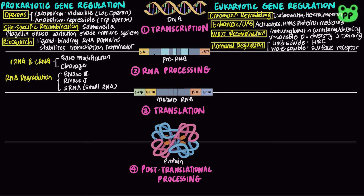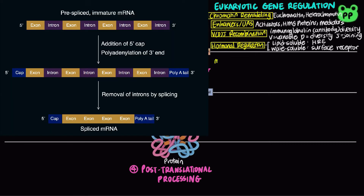On the other hand, eukaryotic mRNAs are processed before translation. mRNA processing includes 5' capping, 3' polyadenylation, RNA editing, and RNA splicing. 5' capping and 3' polyadenylation protect the mRNA from degradation. RNA editing involves deamination and uridine insertion and deletion. RNA splicing removes the non-coding introns from the primary transcript and joins the coding exons to form a continuous sequence.